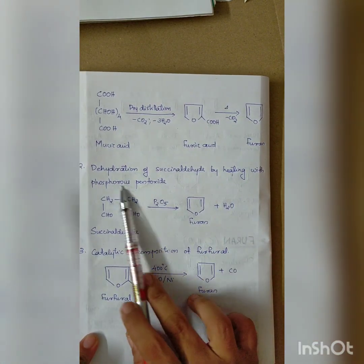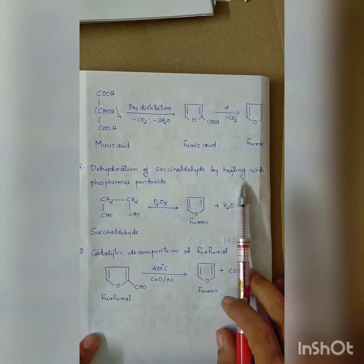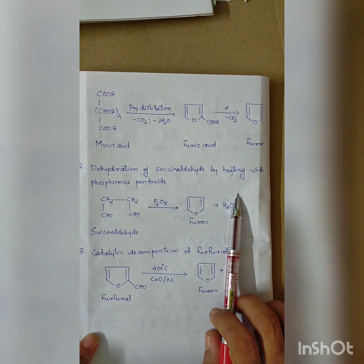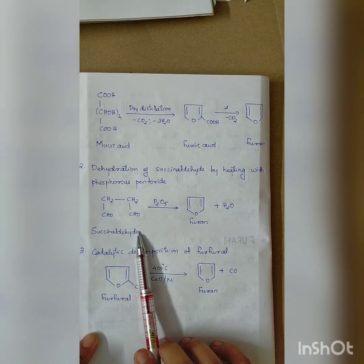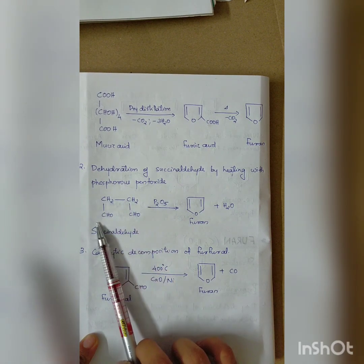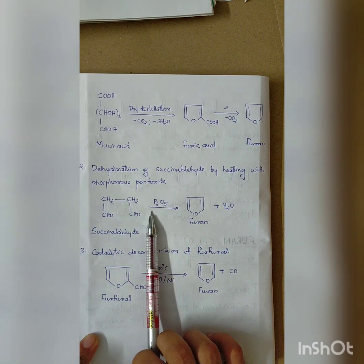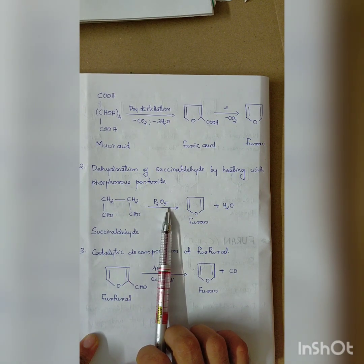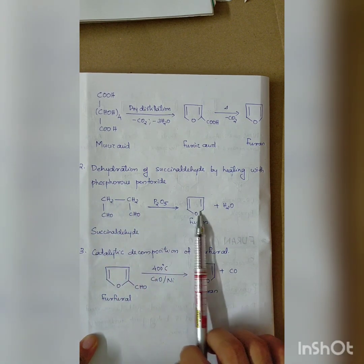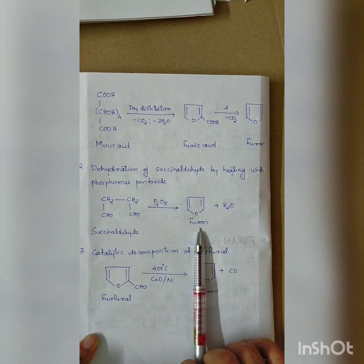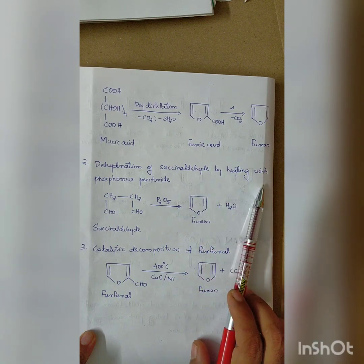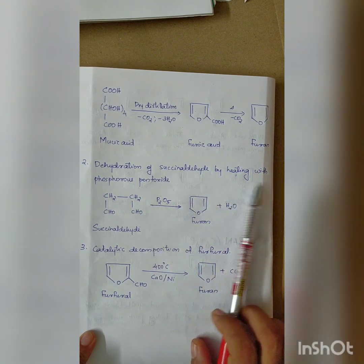The second method is dehydration of succinaldehyde using phosphorus pentoxide (P₂O₅). Succinaldehyde has two aldehyde groups. Heating with phosphorus pentoxide causes dehydration to produce Furan.